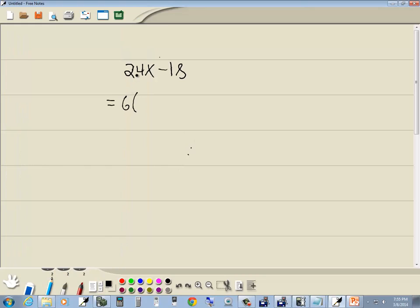I'll factor out a 6. Factor means divide out. 24 divided by 6 is 4 with an x, minus 18 divided by 6 is 3. So our answer is 6 times 4x minus 3. Thank you.